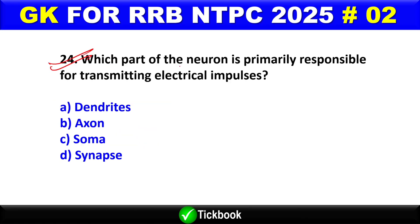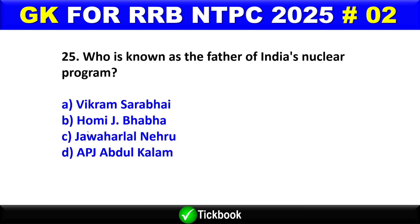Question number 24: Which part of the neuron is primarily responsible for transmitting electrical impulses? Option B is the right answer — the axon.